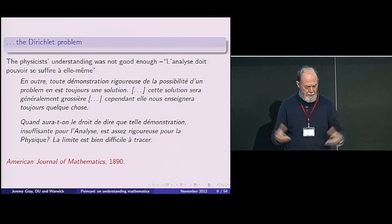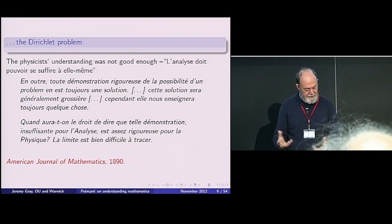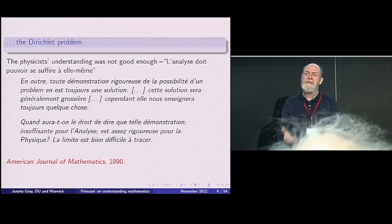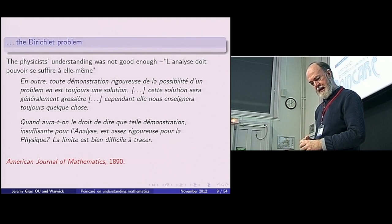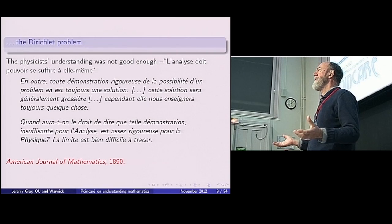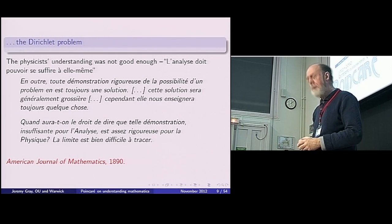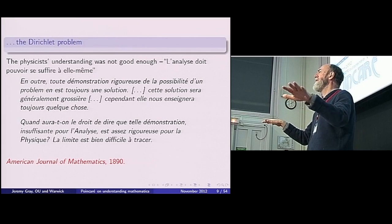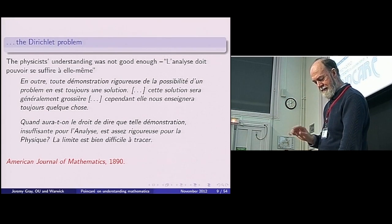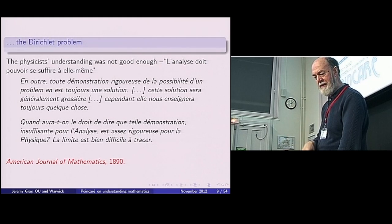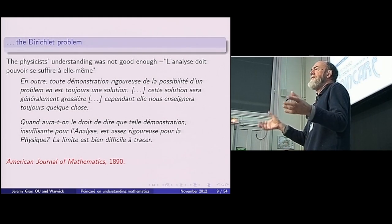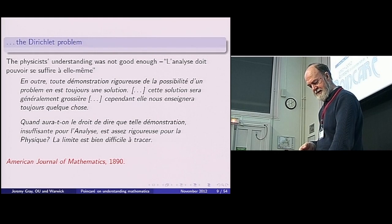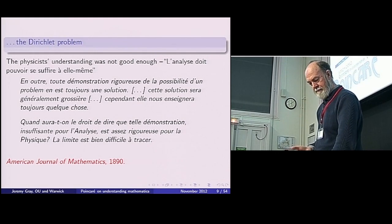And then I give you this remark of his. In any case, a rigorous proof is the proof of the possibility of something. It always teaches us something. And who has the right to say that a solution that is good enough for physics is not good enough for mathematics? You can't distinguish by any clear means between the arguments of one kind and the arguments of another. And indeed, physics is a heavily mathematized subject. So it's not really clear what the physicist's intuition is without some component of mathematics.